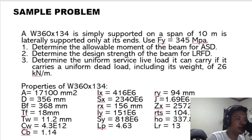LP is equals to 4.63. RY is equals to 94 mm. J is equals to 1.69E6. ZX is equals to 2,572E3. RTS is equals to 104.39 mm. HO is equals to 337.82 mm. And LR is equals to 13 mm.